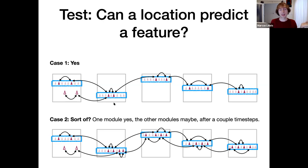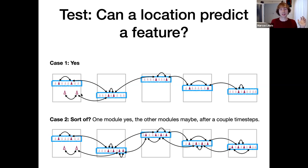My intuition says yes. The fact that there are these other two cells that are kind of close to this attractor point isn't a problem because these cells aren't receiving grid cell input. So I think that in their model, a location is going to successfully predict a feature. Whereas in ours, when we talk about grid cells of multiple scales, it doesn't really work because that requires a readout we don't like. But here, I don't think there's any such problem.